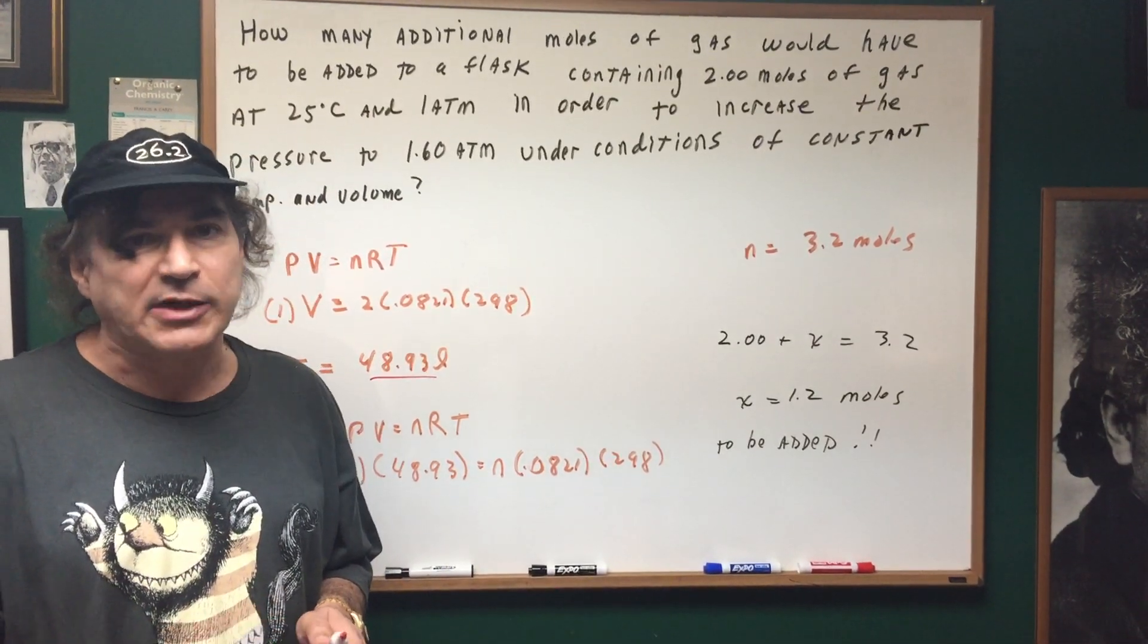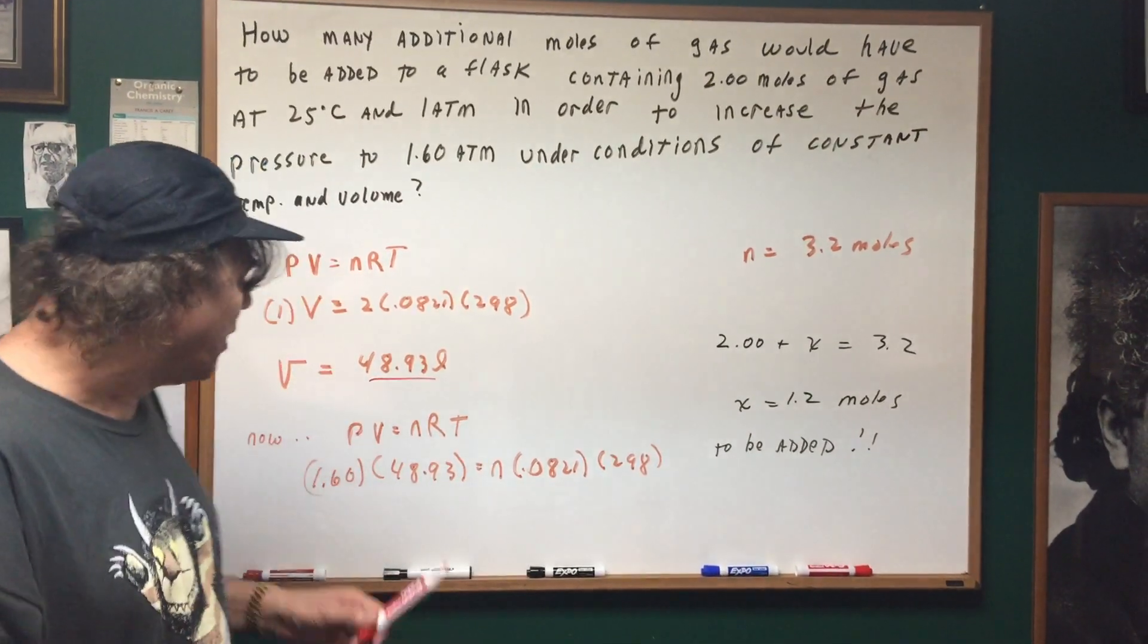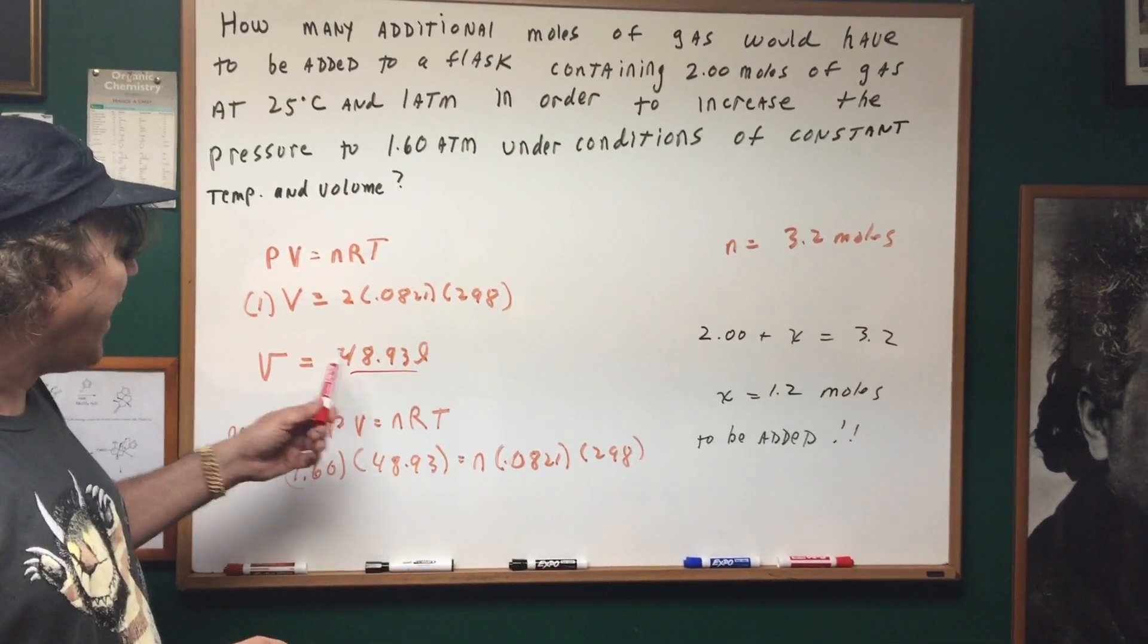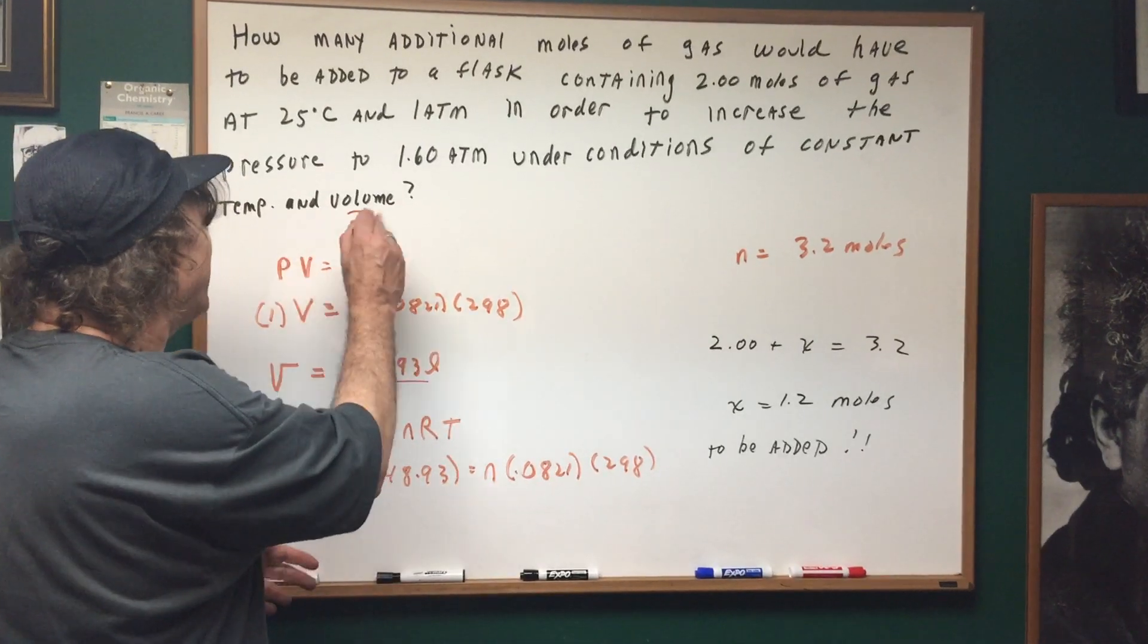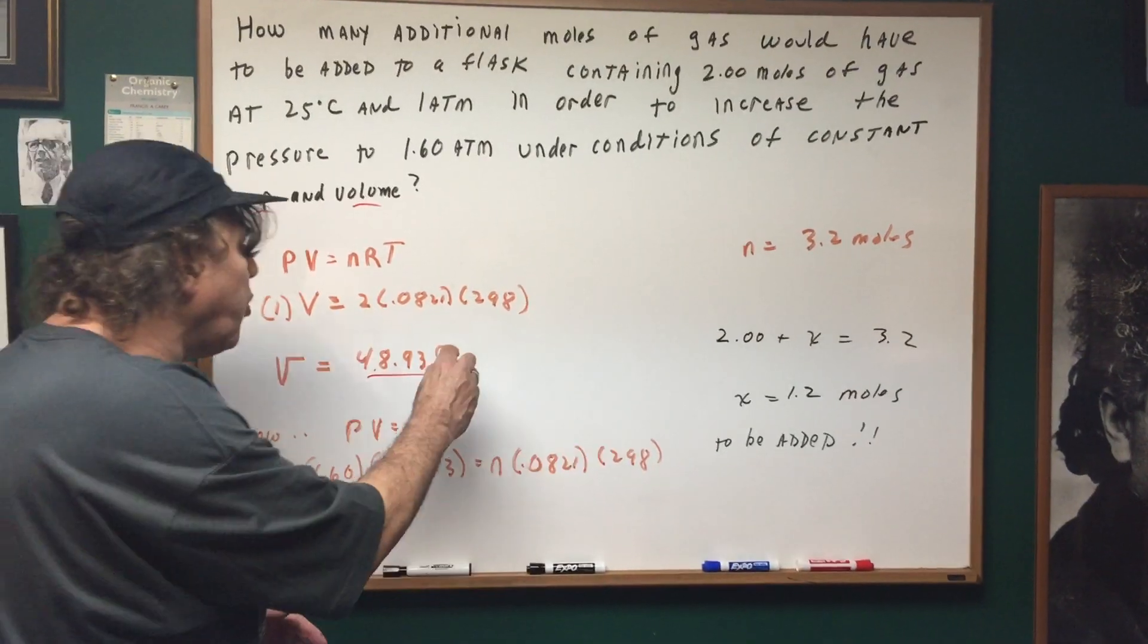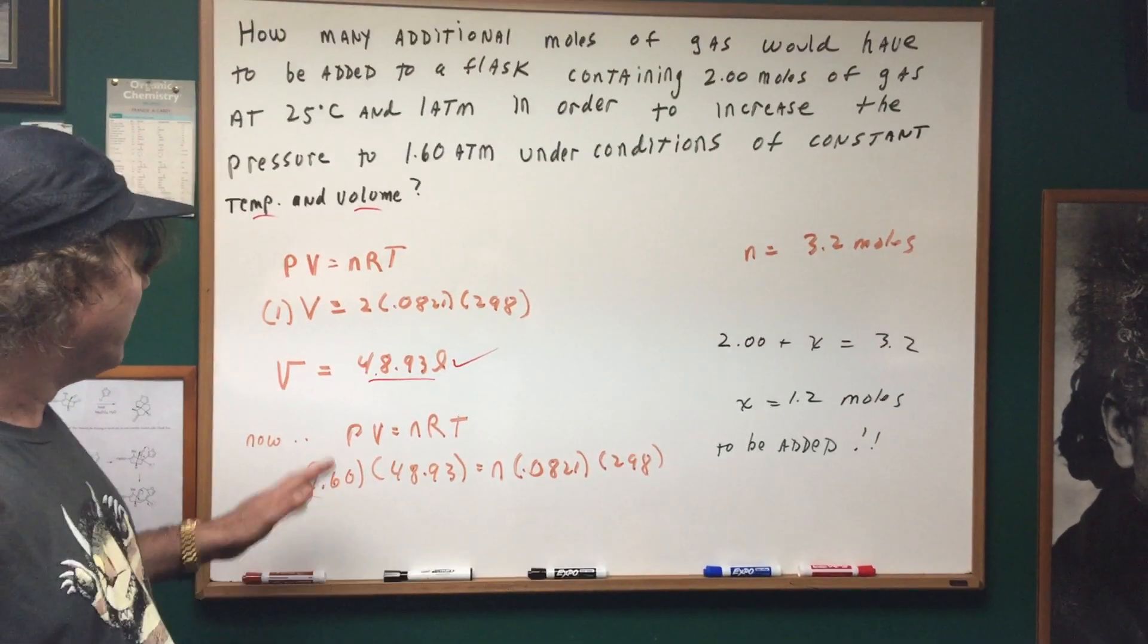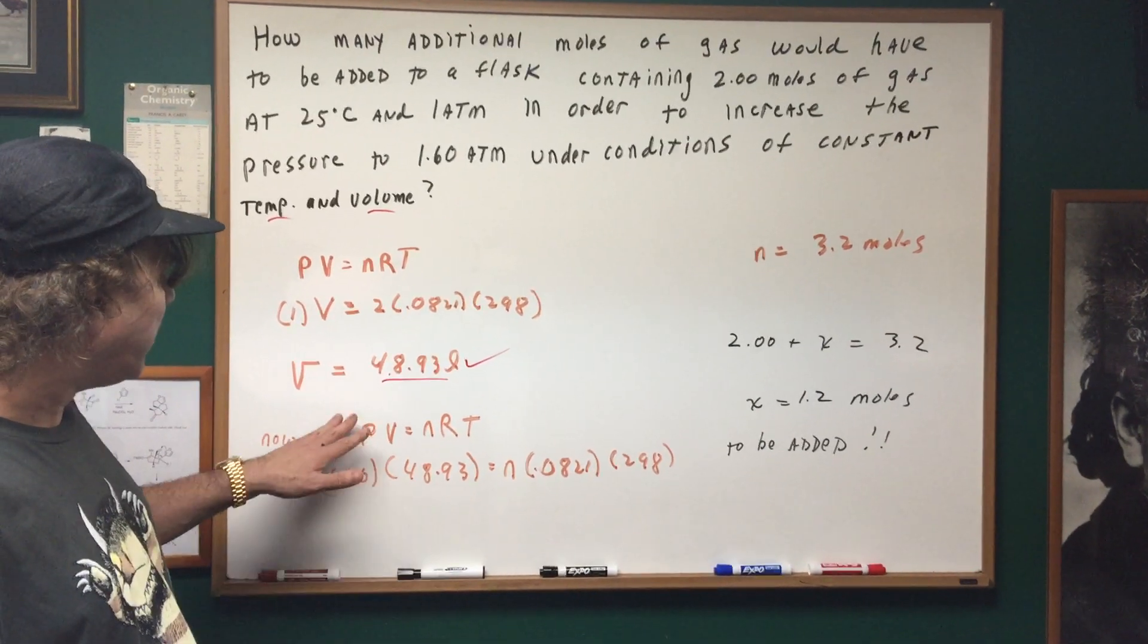On the DAT exam the numbers will be perfect, so even if you wanted to do this with a calculator, that's fine as long as you know the concept. So what we did is we found the volume of the flask. Now that doesn't change, and because we know that the volume and the temperature won't change, once we got the constant volume, we're gonna now use PV = nRT a second time.